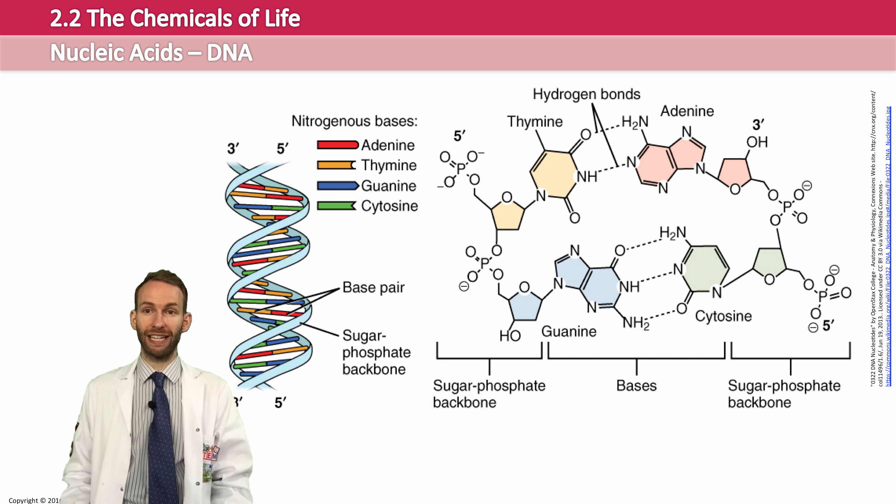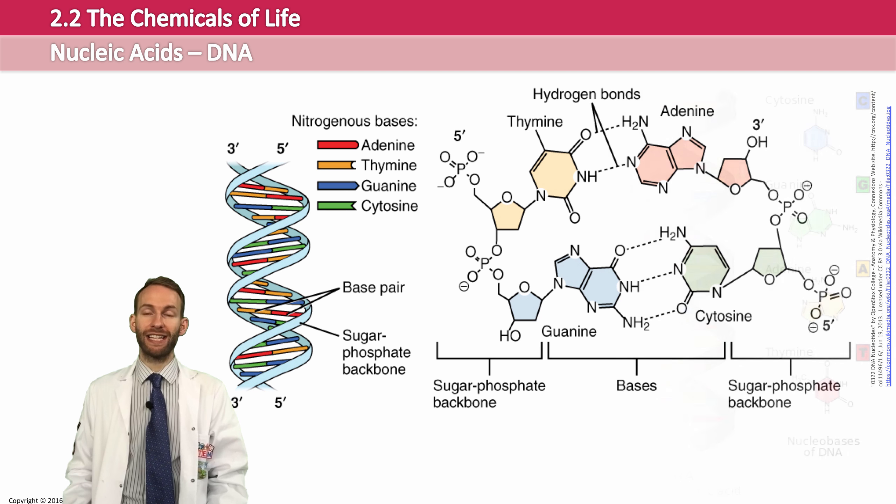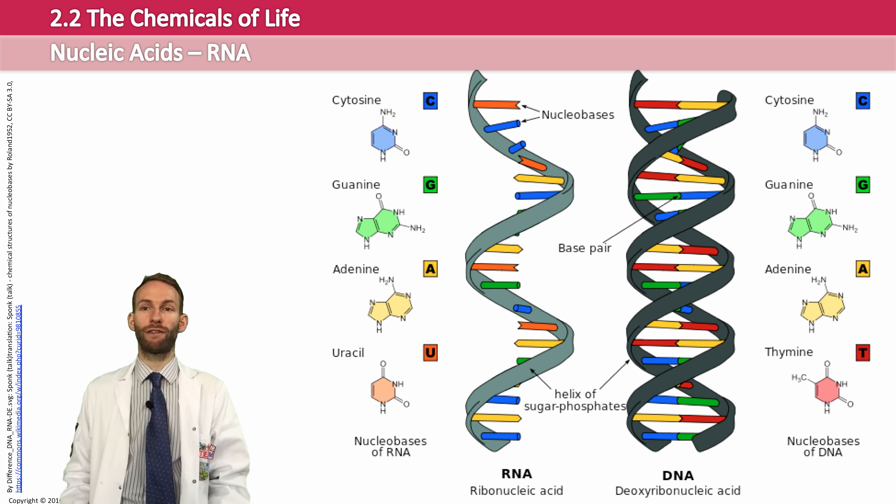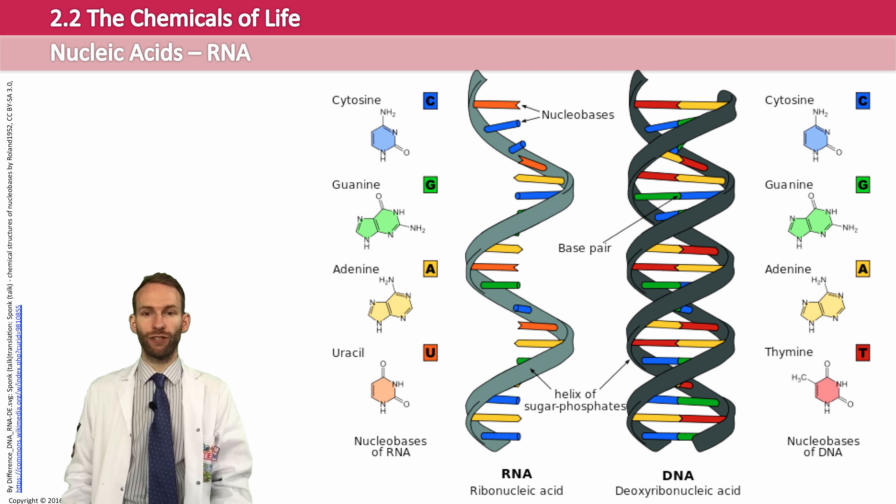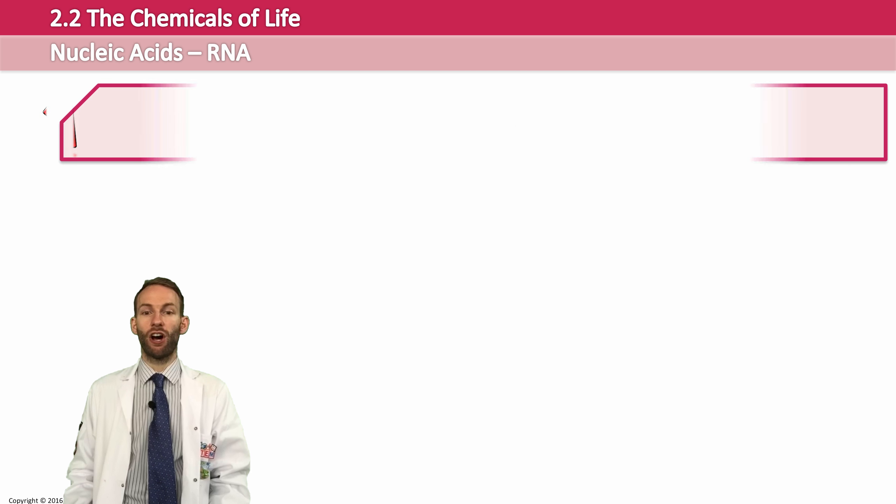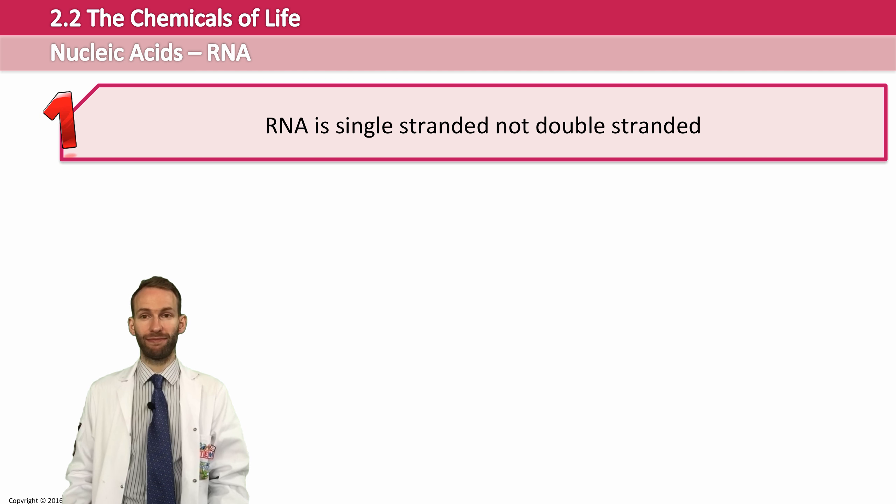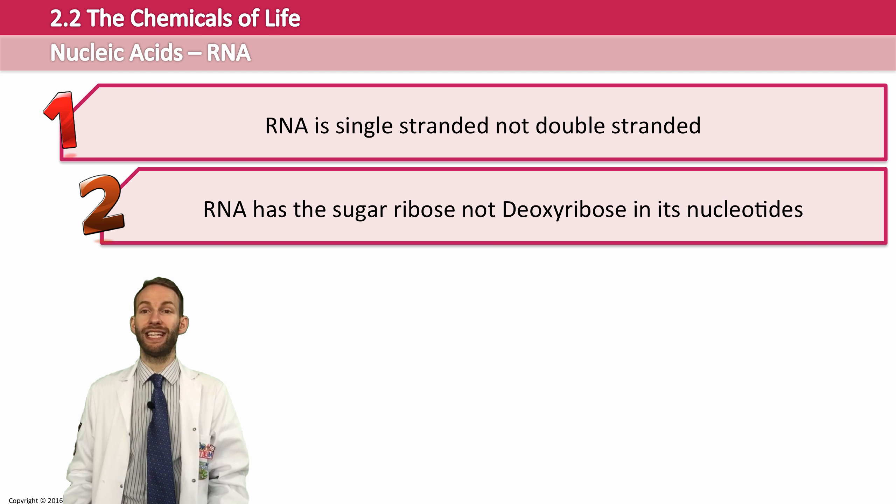So, the second nucleic acid we're going to look at is called RNA. And it's actually very similar to DNA, apart from three major differences. RNA is a single-stranded molecule. It's not double-stranded like DNA. RNA has a different sugar in its nucleotides. In DNA, it was deoxyribose, but in RNA, it's ribose.